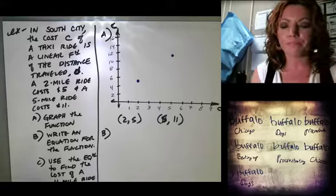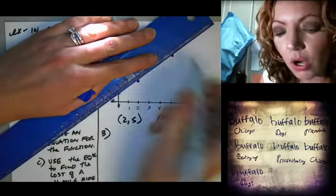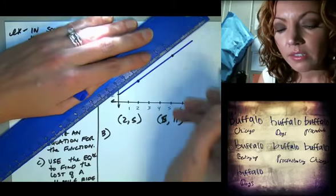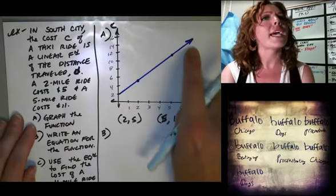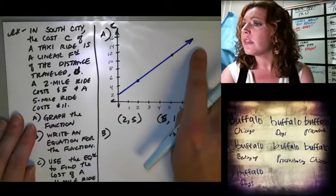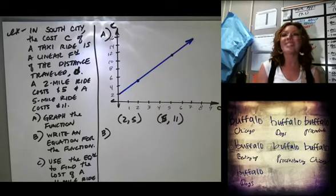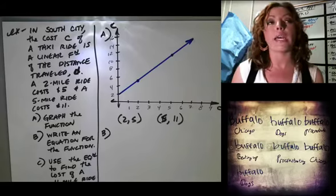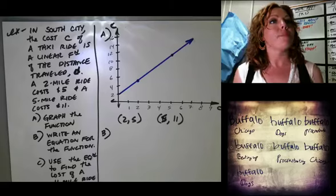What do we do with those two points? Draw a line. Do I want to go past my axes? No. Why not? There's no such thing as negative distance. And does it make sense to put an arrow at the end? Yes — the cost keeps going up the farther you go; they don't tend to have a cap on it.